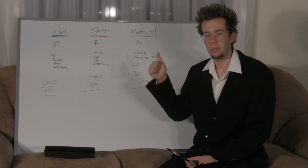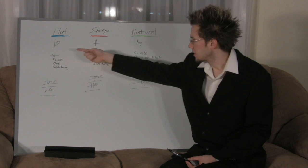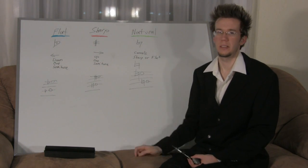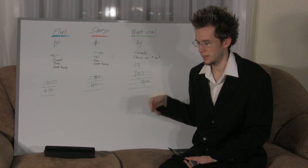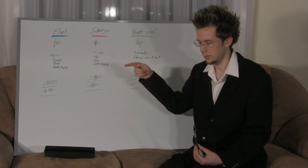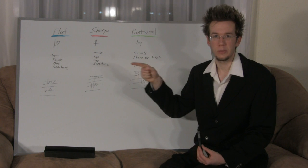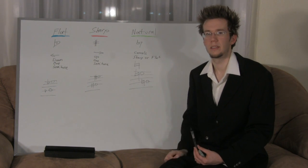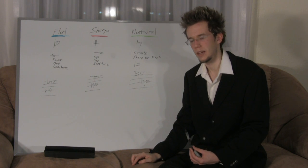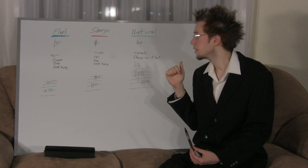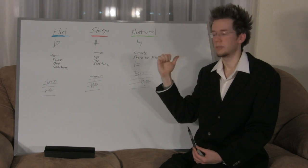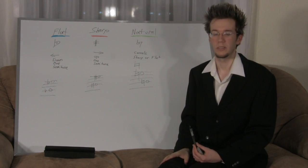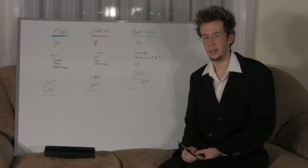To summarize: flats go down a semitone, sharps go up a semitone, and naturals cancel. On the piano — and generally — flats are to the left and sharps are to the right. Sharps go up, flats go down, and naturals cancel. If you can learn and memorize that, that would be awesome.